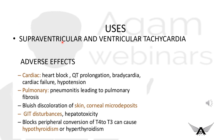Amiodarone adverse effects include cardiac, pulmonary, GIT, and other effects. Cardiac: heart block, QT prolongation, bradycardia, hypotension, and cardiac failure. Pulmonary: pneumonitis leading to pulmonary fibrosis. Other effects: bluish discoloration of skin, corneal micro-deposits, hyper/hypothyroidism (it blocks T4 conversion to T3), and GI disturbances.